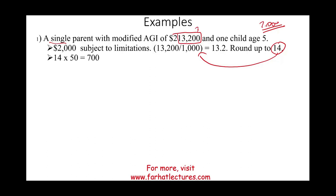For each $1,000 above the threshold, we reduce the credit by $50. So 14 times $50 equals $700. Therefore, the credit is $2,000 minus $700, and the amount is $1,300.